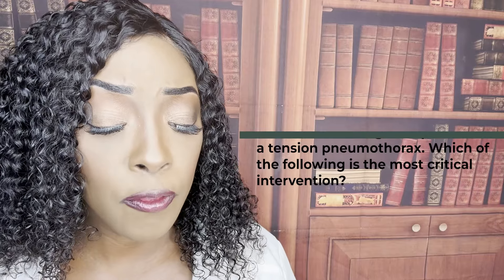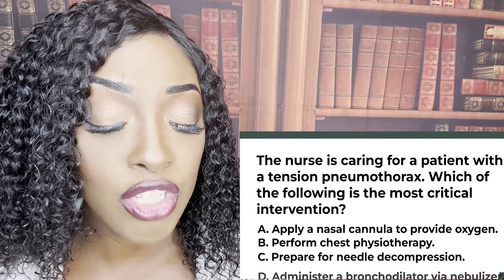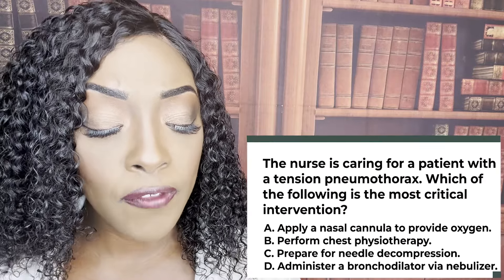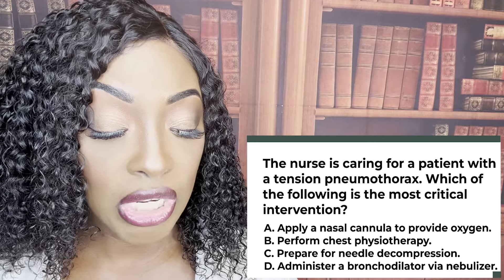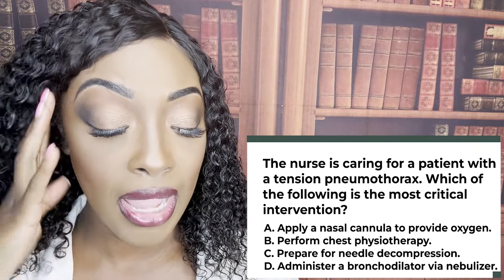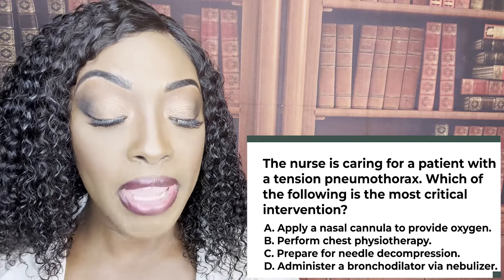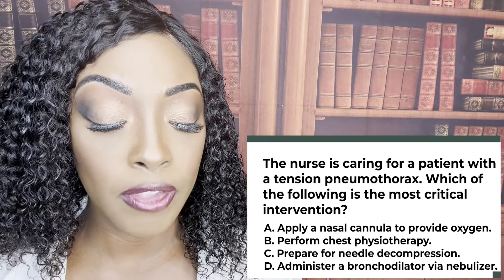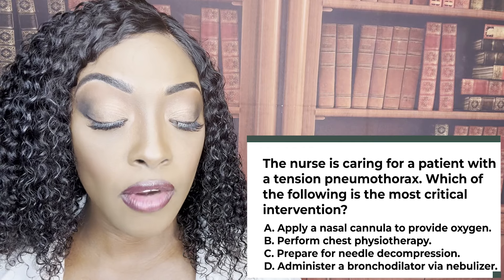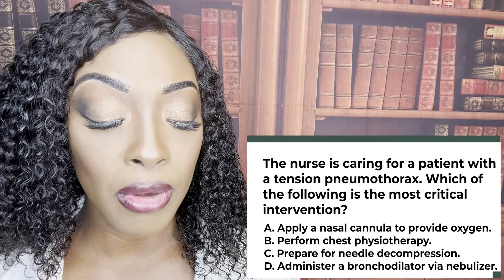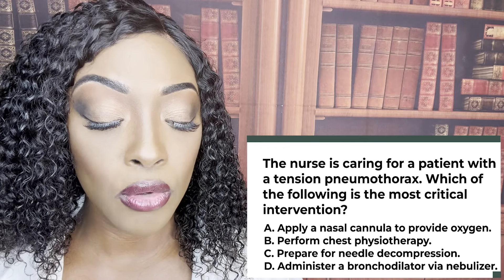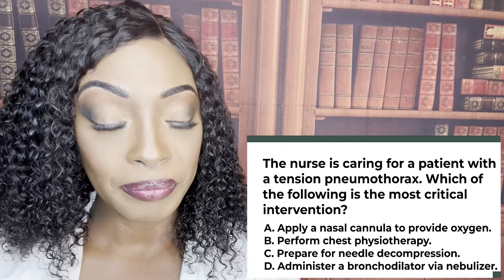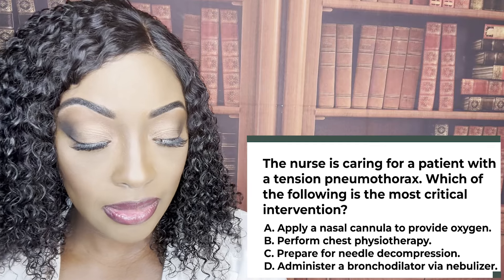Next question. A nurse is caring for a patient with a tension pneumothorax. Which of the following is the most crucial intervention? A, apply nasal cannula to provide oxygen. B, perform chest physiotherapy. C, prepare for needle decompression. Or D, administer a bronchodilator via nebulizer. What do you guys think?